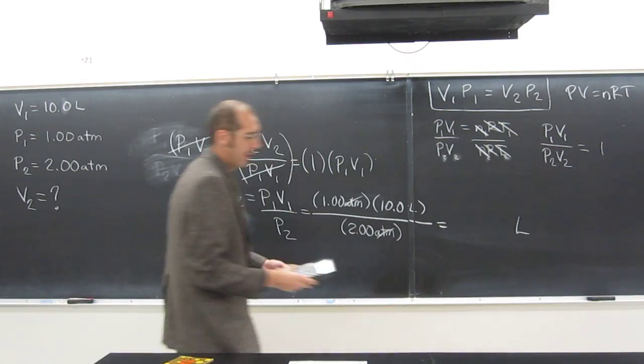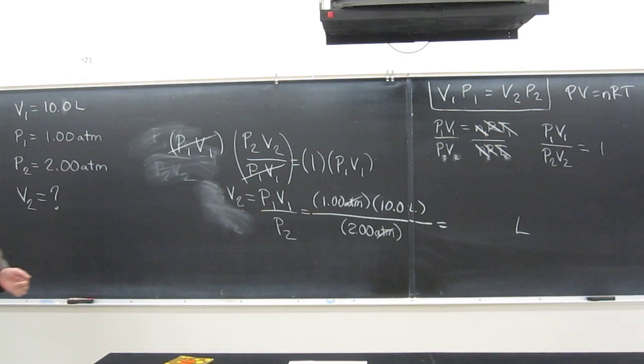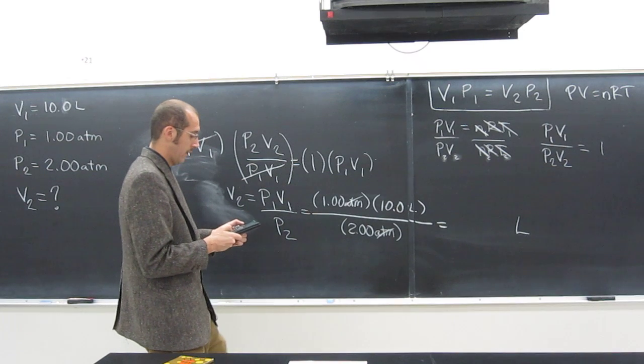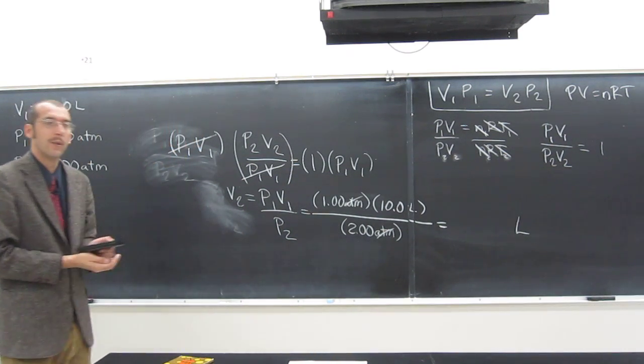So all we've got to do is if you can't do this calculation in your head, right, take your calculator. And if you can't, it's all right. We've all got a calculator, okay? So let's do it with our calculator. 1 times 10 divided by 2. So what do you get?